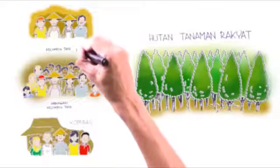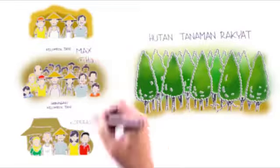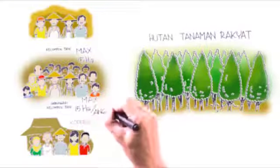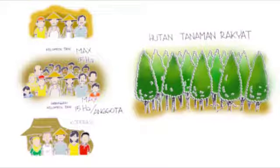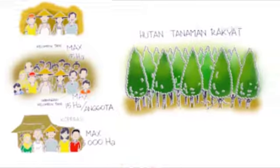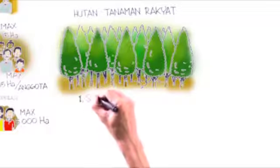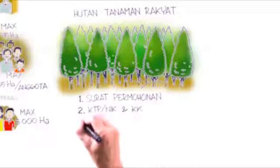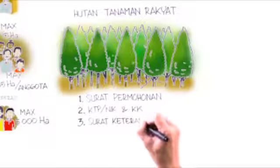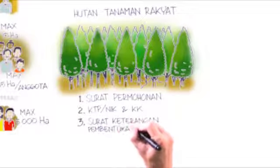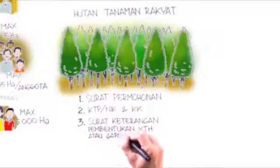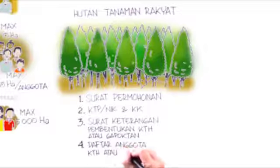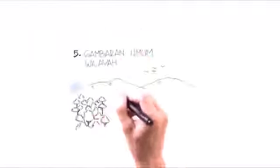IUPHHK-HTR can be submitted by a forest farmer with an area of up to 15 hectares, a forest farmers group or an association of farmers groups with an area of up to 15 hectares per member, or a forest farmer cooperative with an area of up to 5,000 hectares. Documents which need to be prepared: a letter of application, the resident's ID card or KTP, resident's ID number or ICA, the family registry card or a certificate issued by the village chief if the applicant is a member of a forest farmers group, a certificate issued by the village chief concerning a forest farmers group or an association of farmers groups, a list of the forest farmers group or farmers group association members names and general area description, and map of proposed locations.